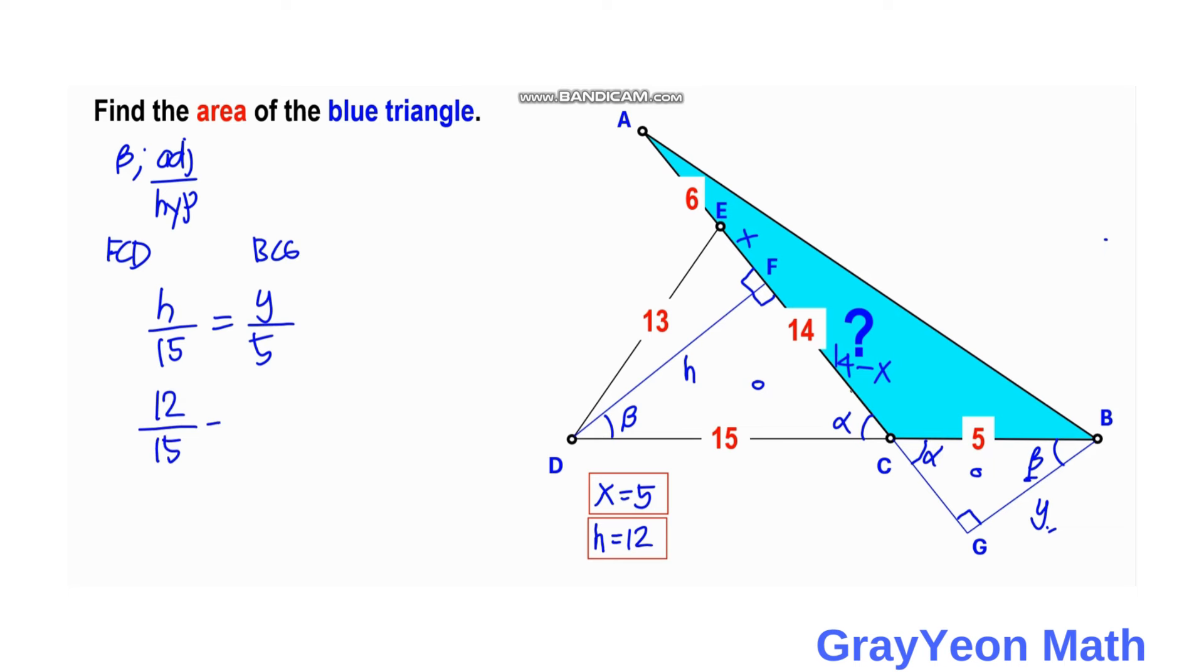So we just copy Y over 5. Y is equal to—we can reduce this into 4 over 5. So Y becomes 12 times 5 over 15, which is 4 over 5 times 5. This gives you 4, so 4 units.